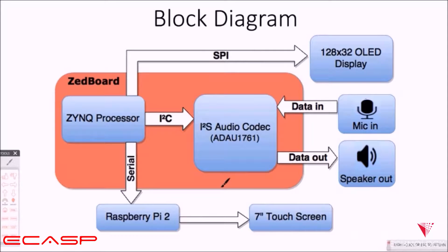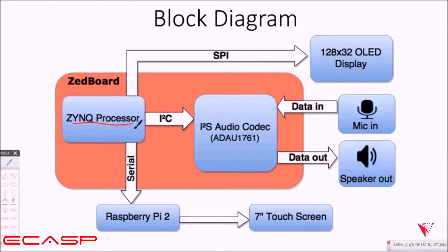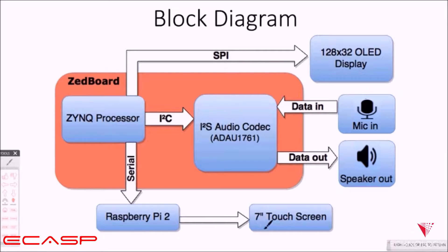This is our project block diagram. First, the audio codec takes the data from the microphone. Then it communicates with the Zynq via I2C. The Zynq can perform four different functions using both FPGA and an ARM processor. It also uses serial communication to communicate with the Raspberry Pi 2 that controls a 7-inch touch screen, which is used as the user interface.